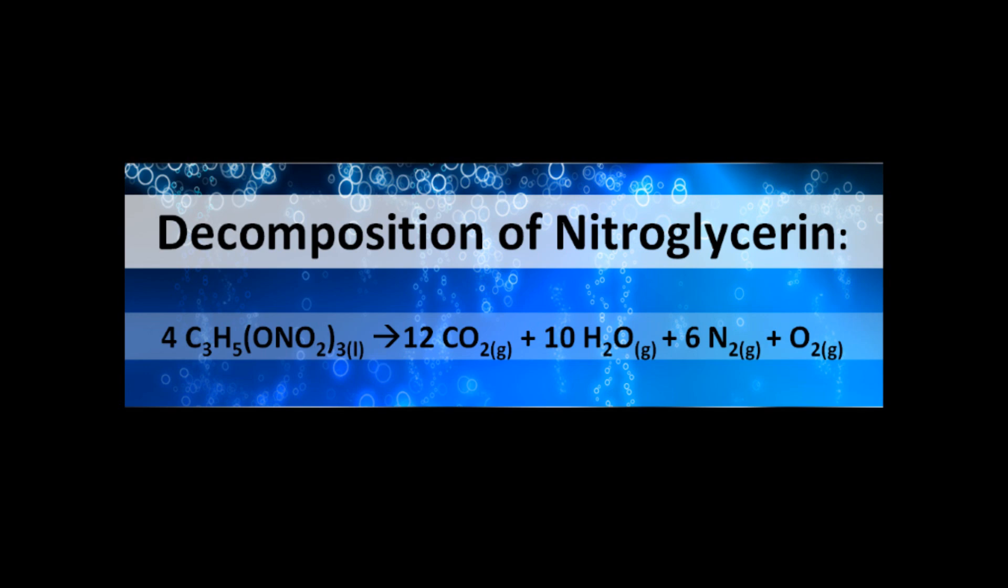4 moles of nitroglycerin decomposes to become 12 moles of carbon dioxide, 10 moles of water, 6 moles of nitrogen, and 1 mole of oxygen. The products can then go through redox reactions to form a product such as nitrogen oxide. When in the air, nitrogen oxides can convert into nitric acid. As mentioned before, nitric acid can then be used in the production of explosives.